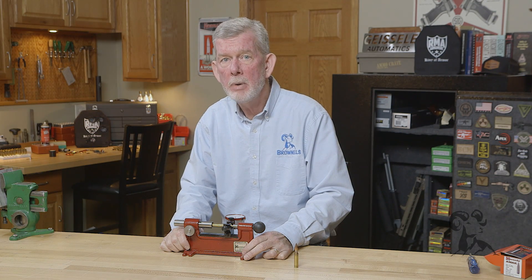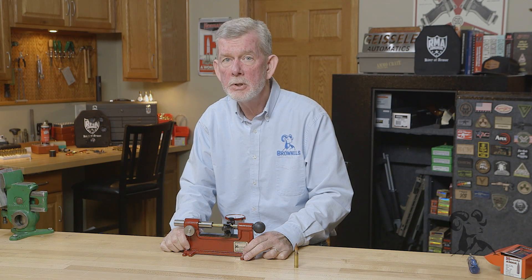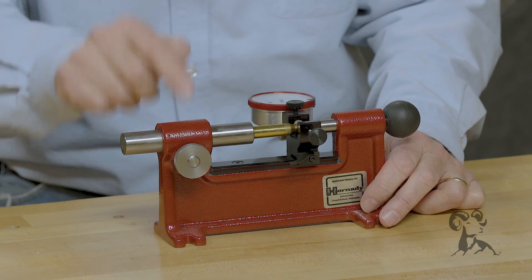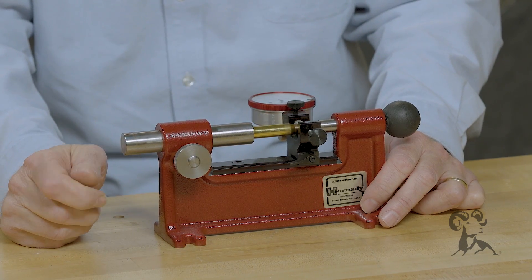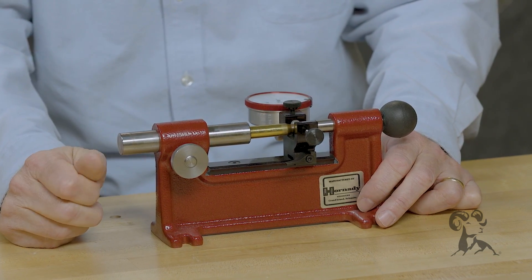To make the most accurate ammunition possible, you need good concentricity on your loaded rounds. The Hornady concentricity gauge is a great way to tell where you're at and to make corrections if you need to.